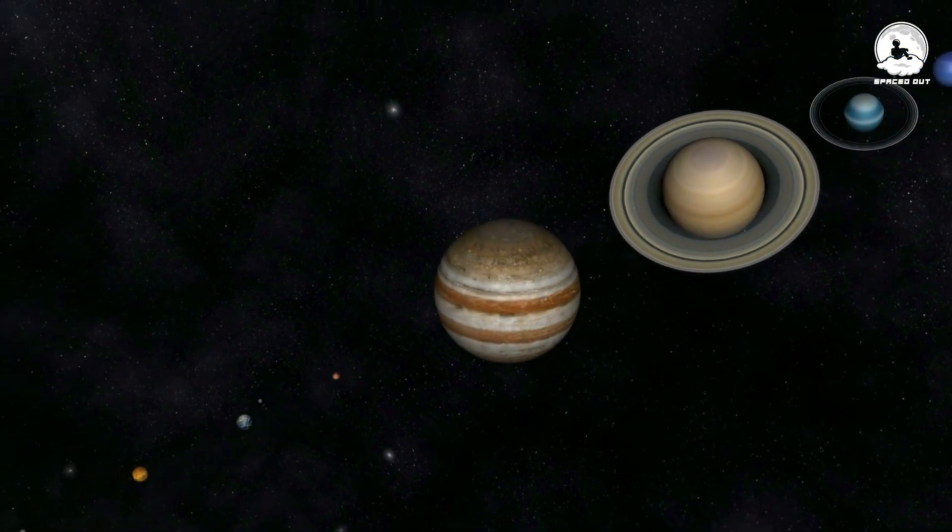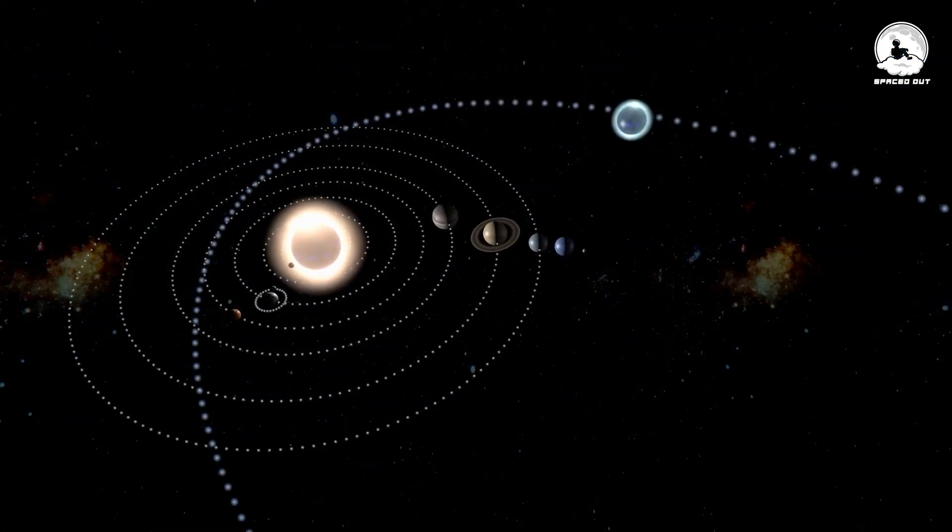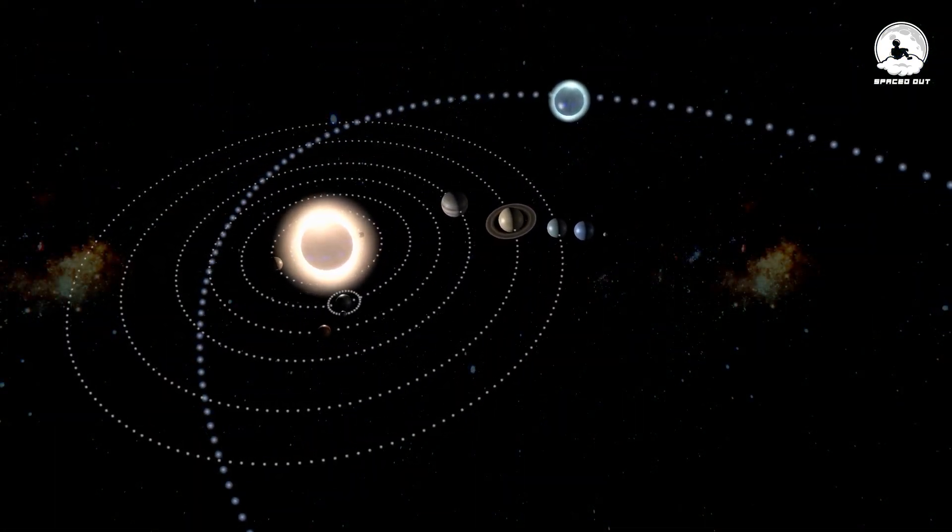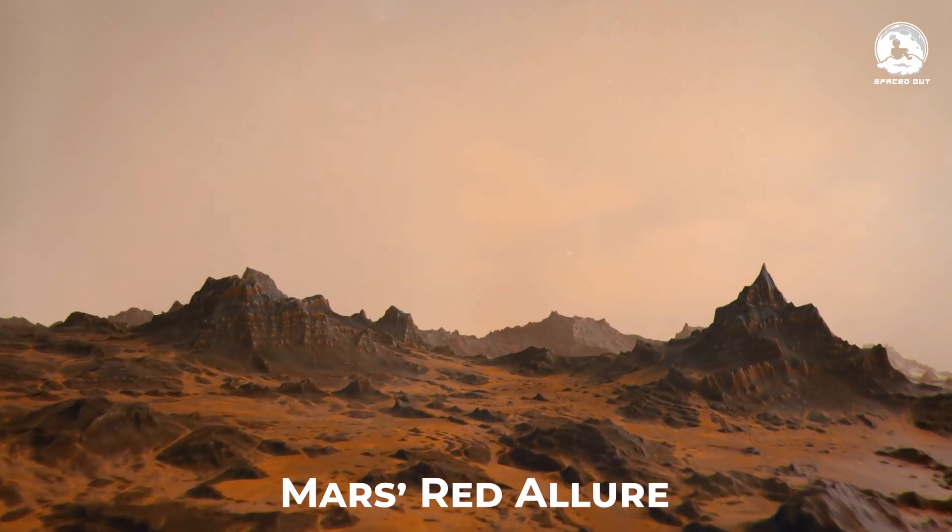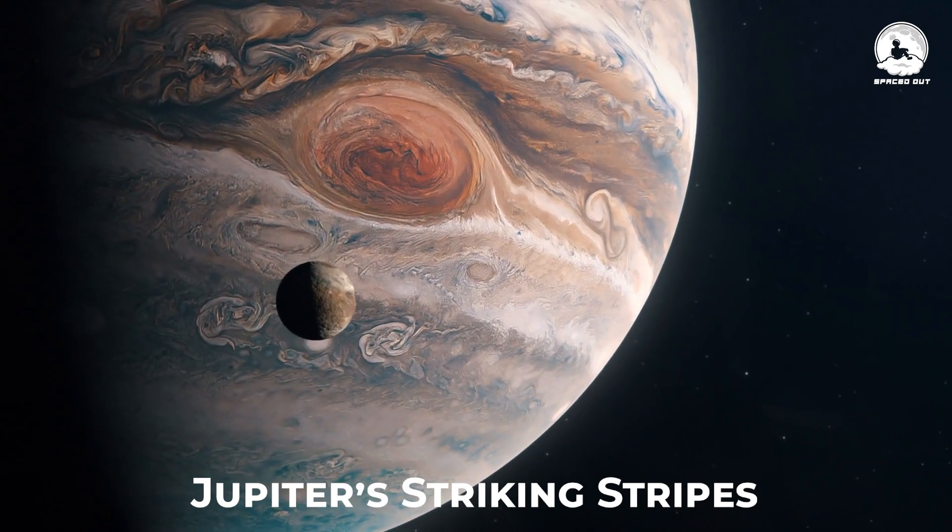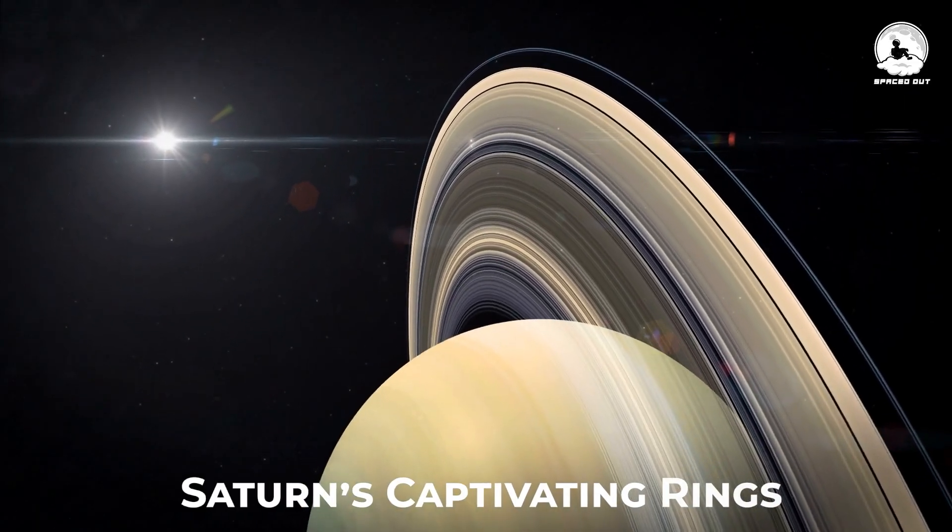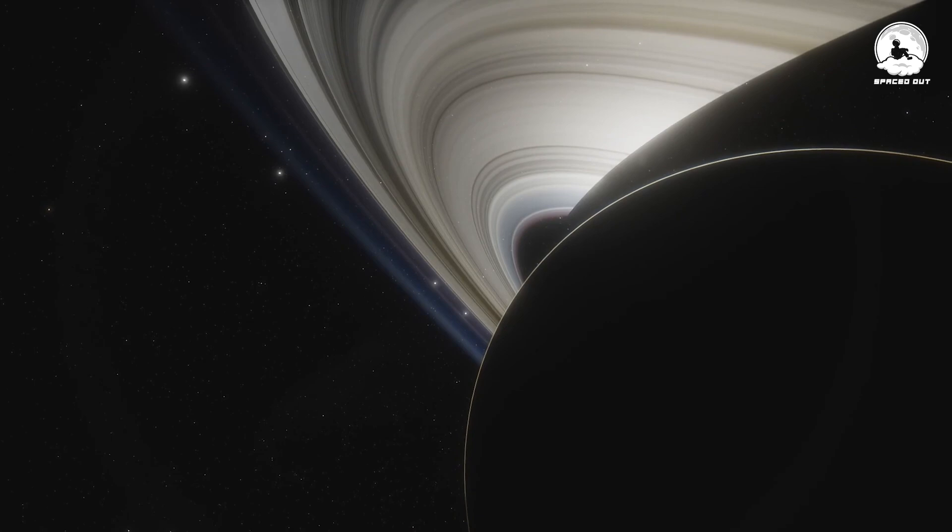When we think of our neighboring planets, we often picture them as familiar orbs in the sky. Earth's dynamic landscapes, Mars's red allure, Jupiter's striking stripes and Saturn's captivating rings are well-known celestial sights.